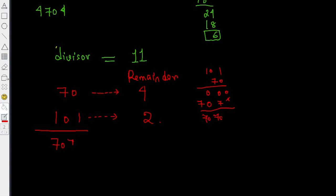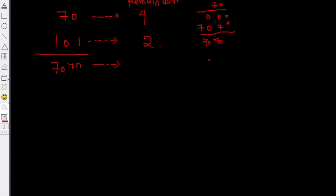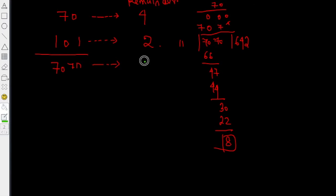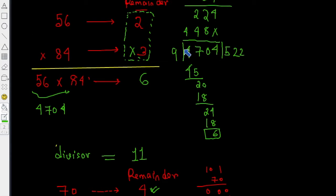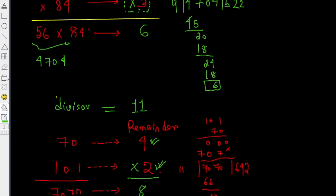Now, what is the product of 70 and 101? That's 7070. When divided by 11, the remainder is 8 — which, as you can already observe, is actually the product of 4 and 2. So something very curious is happening here: if I multiply two numbers, the remainders are also getting multiplied. This happened twice — once with divisor 9, and again with divisor 11.